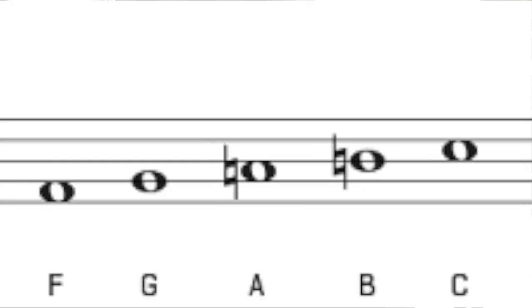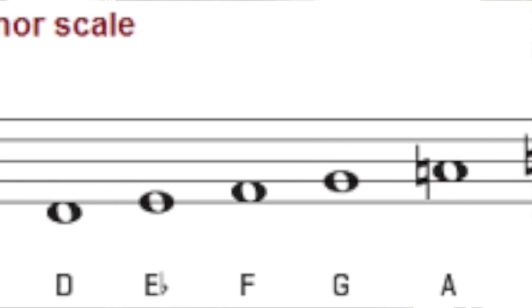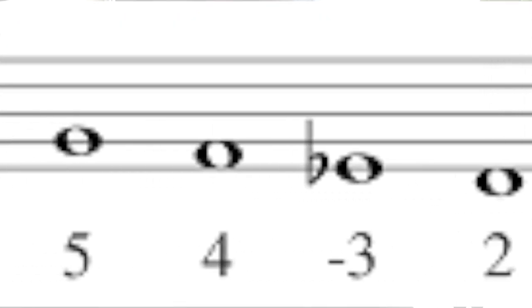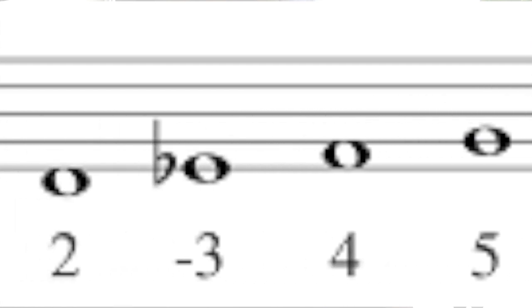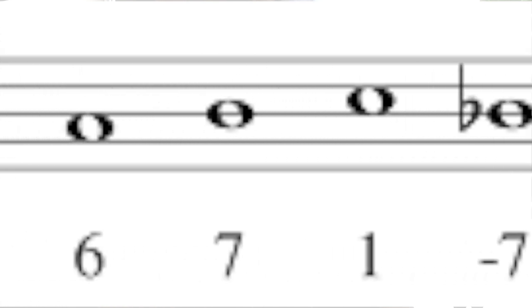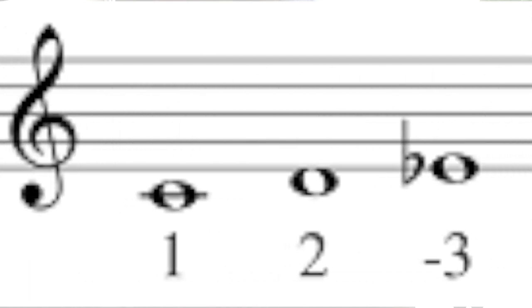First of all I would like to talk a little bit about changes that we will see ascending and descending the scale. When we ascend the scale we have, instead of flat on the sixth and the seventh degree, we're gonna see natural — so the B is gonna become B natural and A is gonna become A natural. But when we descend, the sixth and the seventh degree become flat again.